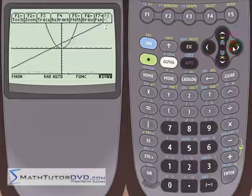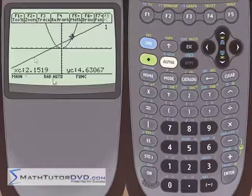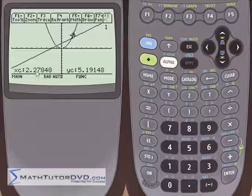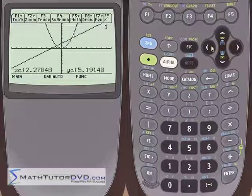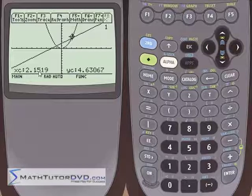So what the calculator's doing is, at every value of every pixel, the value of x that corresponds to, we get a value of y. But what if you don't want to know what this function is equal to here at 2.27, x is equal to 2.27848, or 2.1519. What if you wanted it at 2.20 exactly?